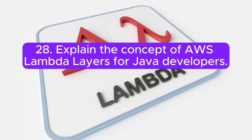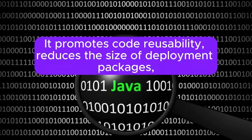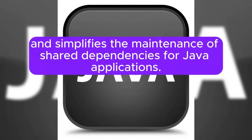Question 28: Explain the concept of AWS Lambda layers for Java developers. AWS Lambda layers allow Java developers to manage and share common code and libraries across multiple Lambda functions. It promotes code reusability, reduces the size of deployment packages, and simplifies the maintenance of shared dependencies for Java applications.